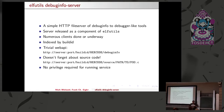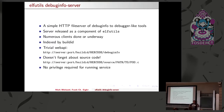The debuginfod is a simple HTTP web server. It has three GET requests: one for the executable - that seems weird, but you might have gotten a core dump from somebody and want to debug it - one for the debug info, and one for the source code. And basically that's the whole HTTP server. They're all indexed by build ID.